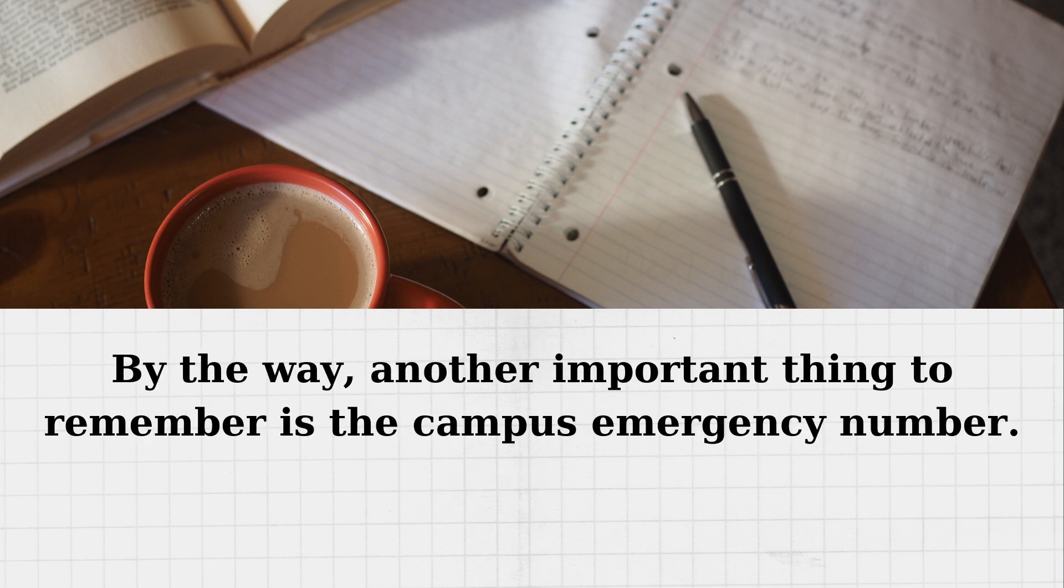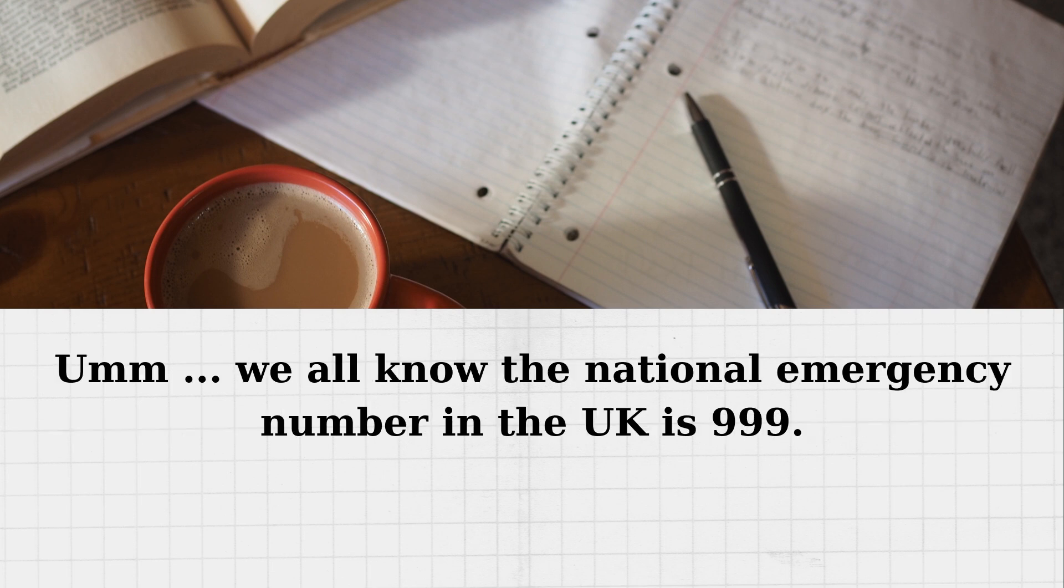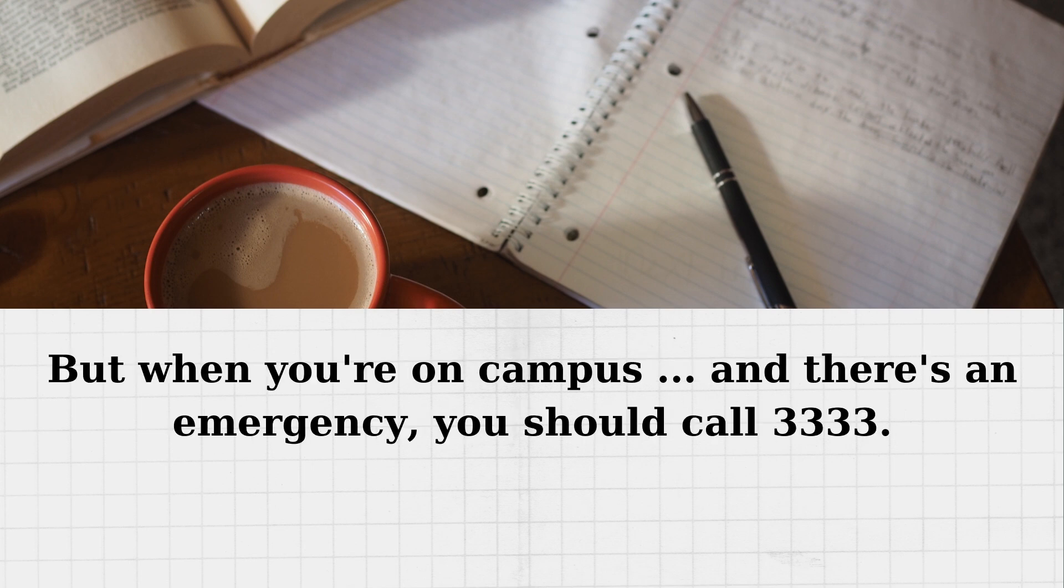By the way, another important thing to remember is the campus emergency number. We all know the national emergency number in the UK is 999. But when you're on campus and there's an emergency, you should call 33 33.